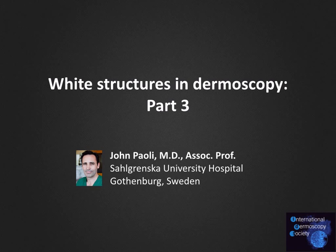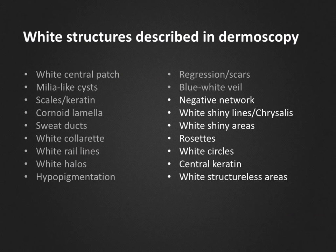Hello, I'm John Pauli and welcome to part 3, which is the last part of this podcast series on white structures in dermoscopy. We will now have a look at some white structures which are found slightly more often in malignant and pre-malignant skin lesions during dermoscopic examination, and we'll start off with the negative network.